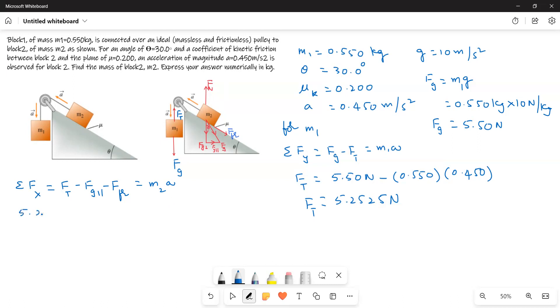So 5.25 minus Fg parallel is M2 times g sin 30 degrees minus F friction is mu K M2g cos 30 degrees is equal to M2 times 0.450.